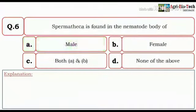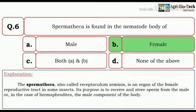Next question is Spermatheca is found in the nematode body of male, female, both A and B, and none of the above. So here the correct answer is female. The spermatheca, also called receptaculum seminis, is an organ of female reproductive tract in some insects. Its purpose is to receive and store sperm from the male or in the case of hermaphrodites the male component of the body.